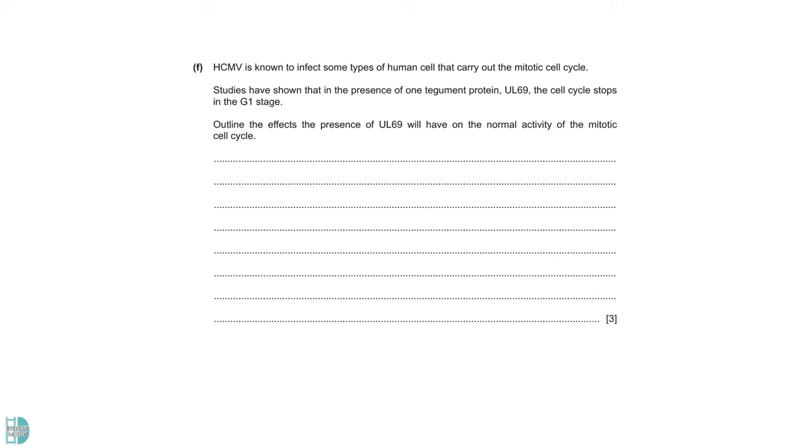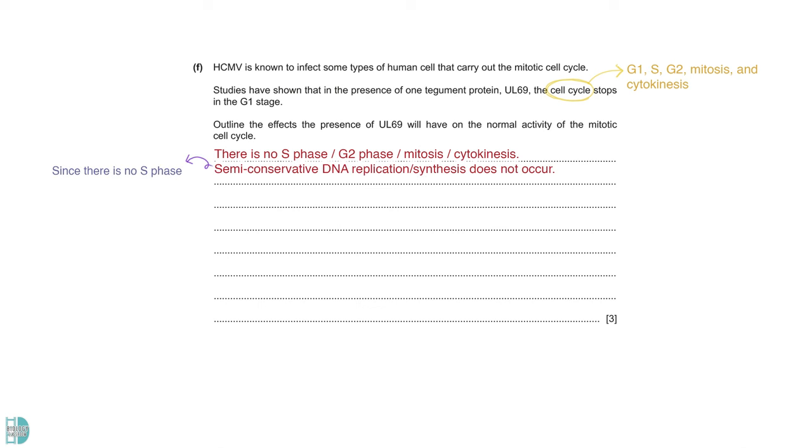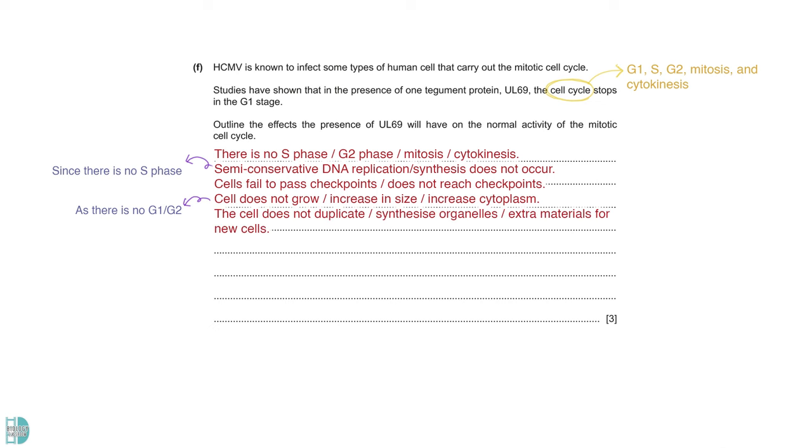Part F talks about a protein that stops cell cycle in the G1 stage. You have to outline the effects of the presence of this protein will have on the normal activity of the mitotic cell cycle. The cell cycle consists of G1, S, G2, mitosis, and cytokinesis. If it stops at G1, the rest of the stage does not occur. However, since there is no S phase, semi-conservative DNA replication or DNA synthesis does not occur. The cell would not reach the checkpoint or could not pass the checkpoint to continue the cycle correctly. G1 and G2 phases would lead to cell growth. Without them, cell does not growth or increase in size. Lastly, a cell that cannot complete all these stages does not duplicate.